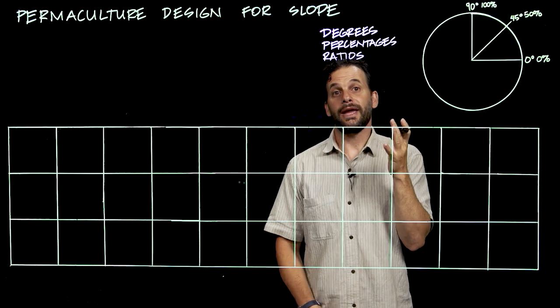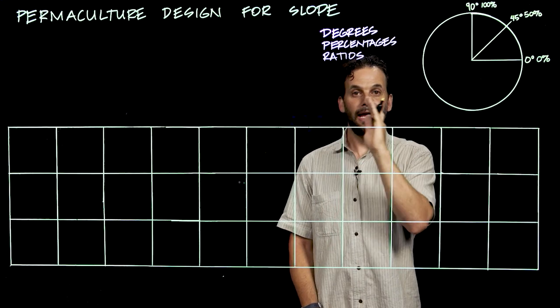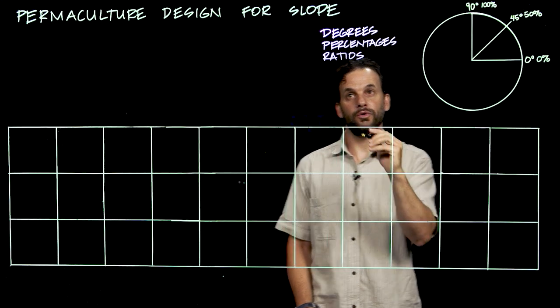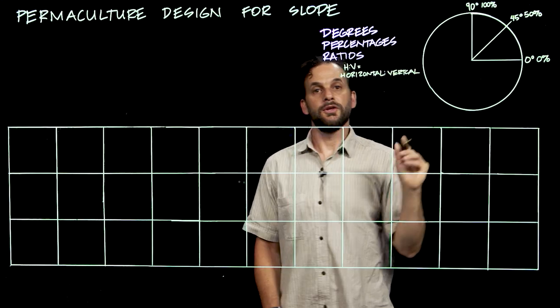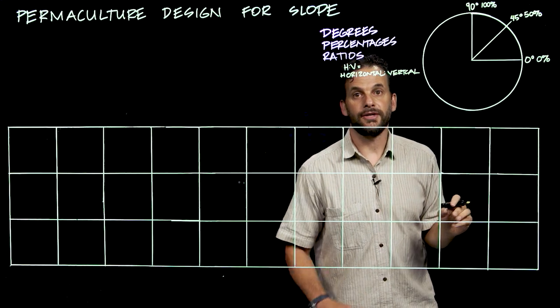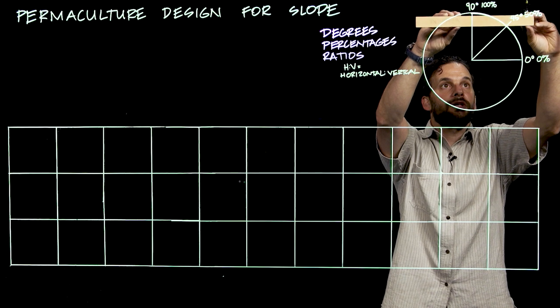Now, the third way to express this same slope is as a ratio, H to V, or horizontal to vertical. So this slope has an equal horizontal to vertical measure, so it is a 1 to 1 slope.